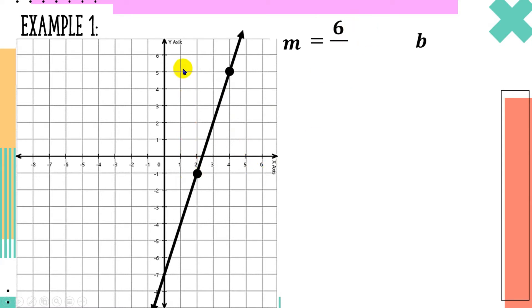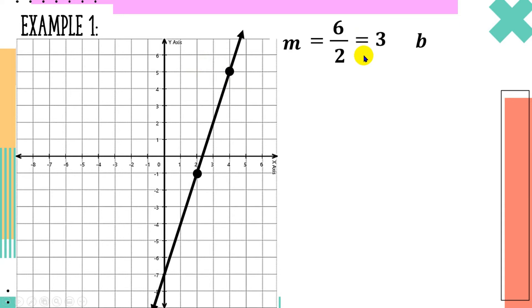Then from this point going to our second point, counting the units to the right — it's positive since it's to the right — we have 1, 2, so there are 2 units. Dividing: 6 divided by 2 gives us 3. So our slope is positive 3.